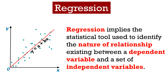Regression is a statistical tool used to identify the nature of relationship existing between a dependent variable and a set of independent variables. Here, dependent variable means the factor which the researcher attempts to understand or predict — also called the explained variable. On the other hand, independent variable refers to the variable which the researcher assumes to have an impact on the dependent variable — also called the predictor variable. Regression analysis is a set of processes which identifies the variable that influences the topic of interest.